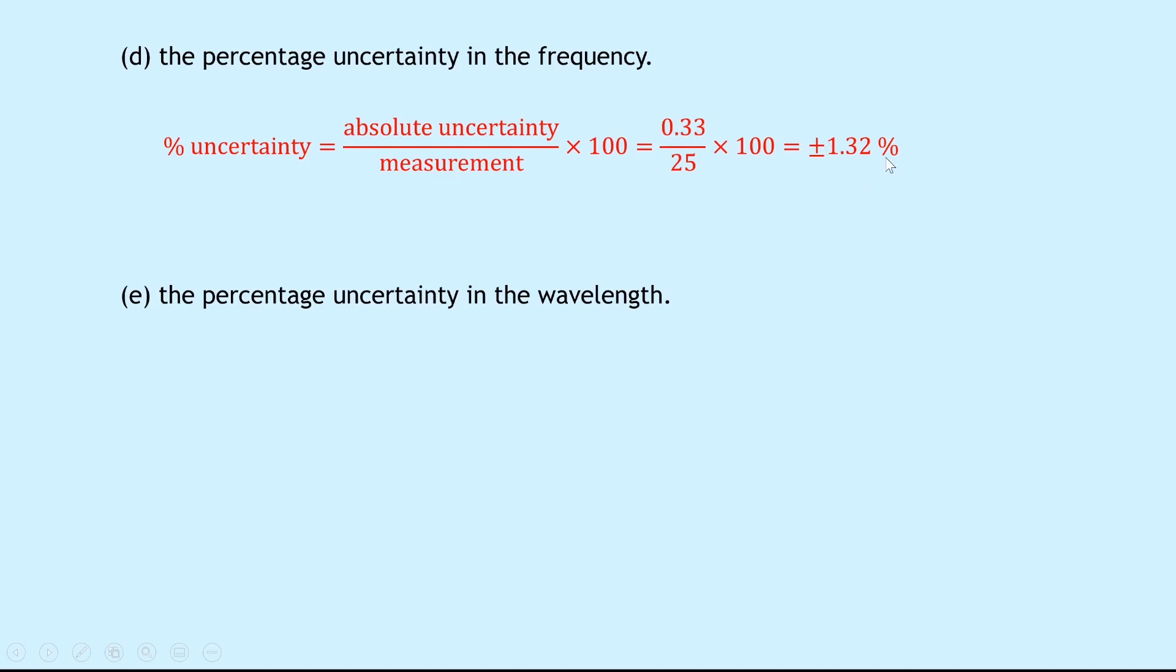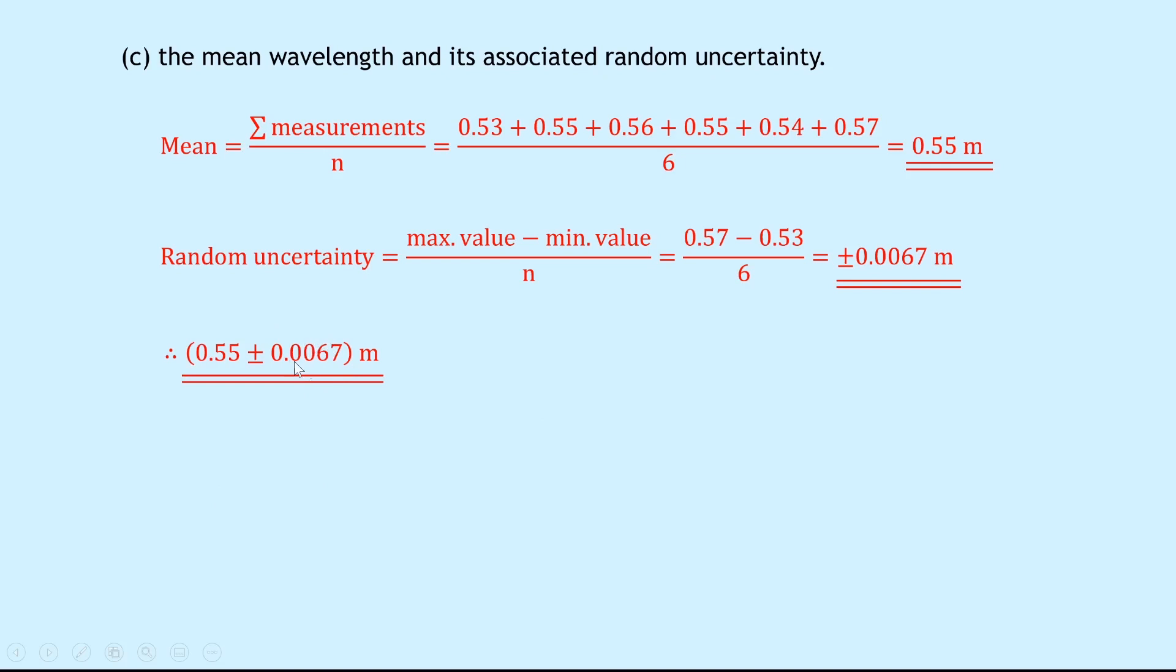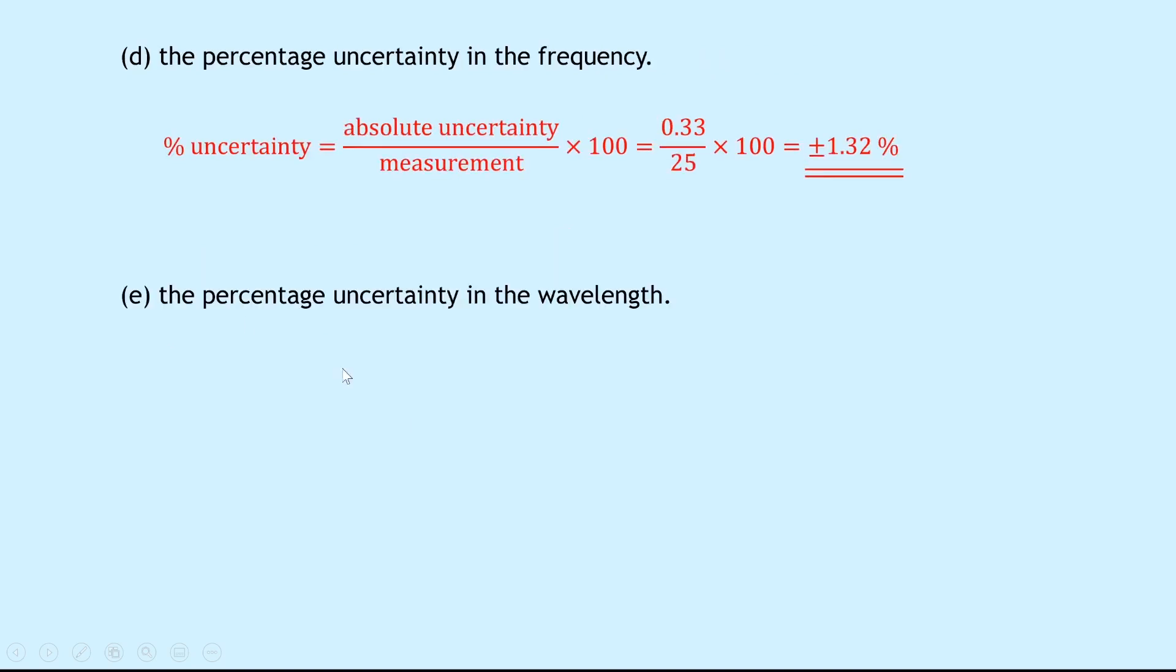Part E says to calculate the percentage uncertainty in the wavelength this time. So we're going to have to look at the answer to part C for this one. So we're going to take our uncertainty of 0.0067 divided by the 0.55 and times by 100 to get our percentage uncertainty, as shown here. So the percentage uncertainty equals absolute uncertainty over the measurement times 100, which is equal to 0.0067 over 0.55 times 100, which equals plus or minus 1.22%. Our two percentage uncertainties are quite similar, but we can see the frequency actually has the higher percentage uncertainty.